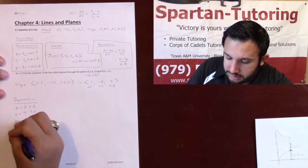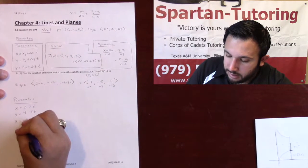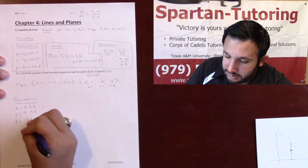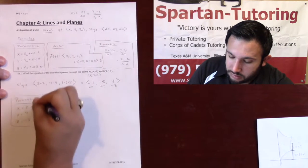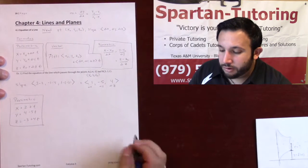And z is going to be z naught, negative 3, plus delta z times t, plus 4t. So, if they want it as a parametric equation, there you go.